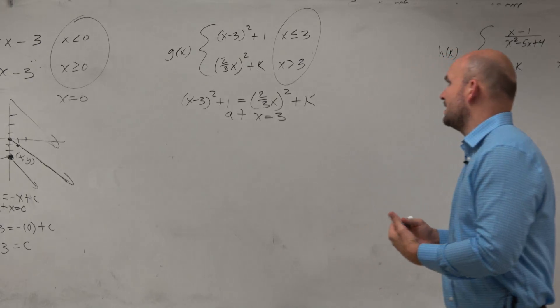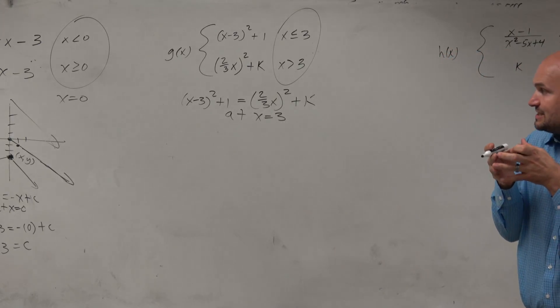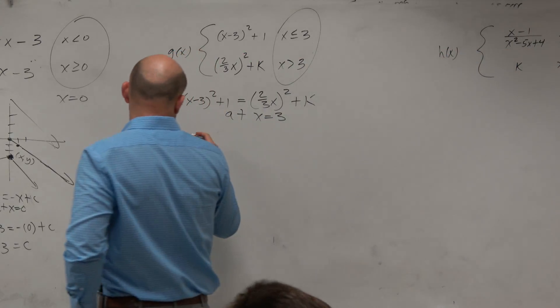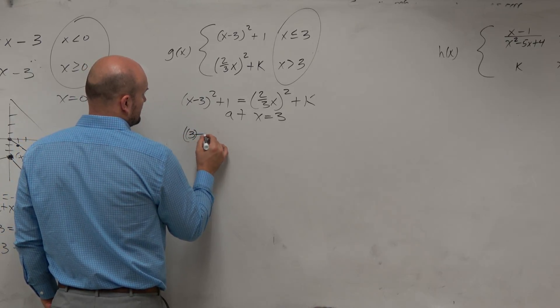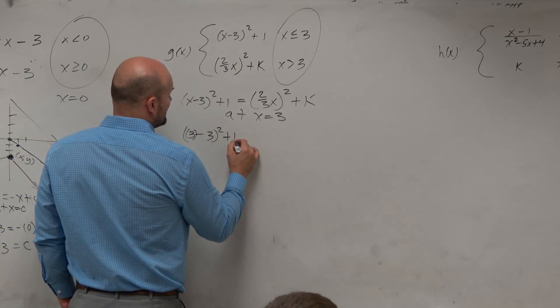I'm not sure why I have so much other talking going on. So now we have x equals 3. You're going to replace that in for x and then solve for k.